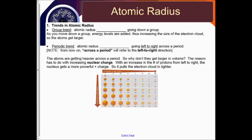For our first trend we're going to talk about atomic radius. The group trend: atomic radius increases going down a group. As you move down a group, energy levels are added, thus increasing the size of the electron cloud, so the atoms get larger.